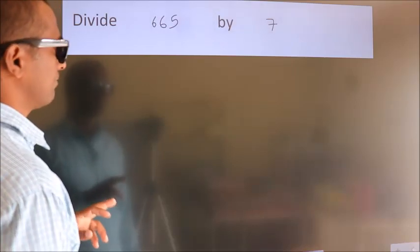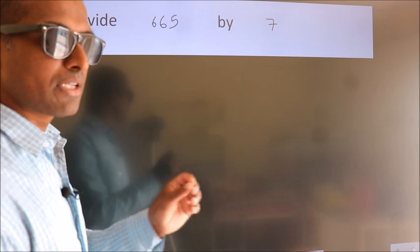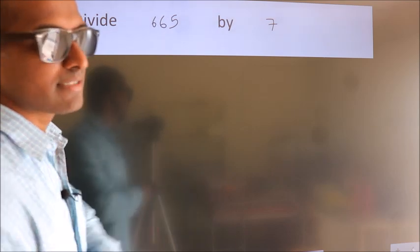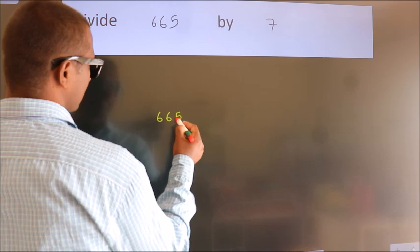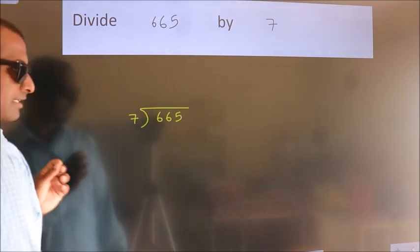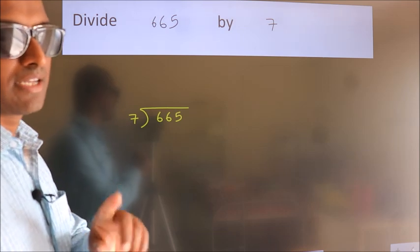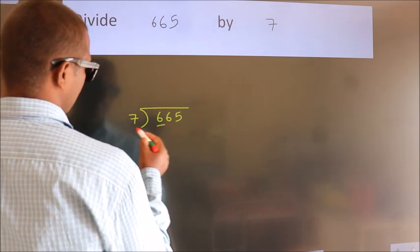Divide 665 by 7. To do this division, we should frame it in this way. 665 here, 7 here. This is your step 1. Next, here we have 6, here 7. 6 is smaller than 7.